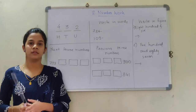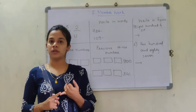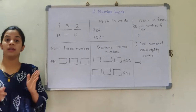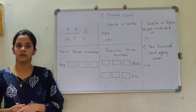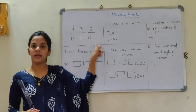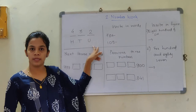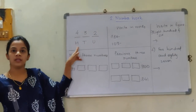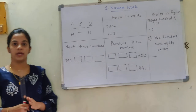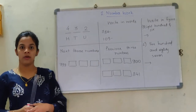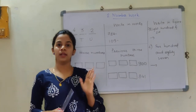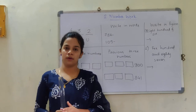When you were in 3rd standard, you already studied the places — for example, the units place, the tens place, and the hundreds place. So we will recall what we studied in earlier classes. You can see here the number 432: 2 is at the units place, 3 is at the tens place, and 4 is at the hundreds place. So we read this number as 432.